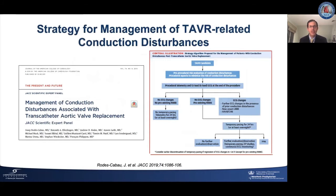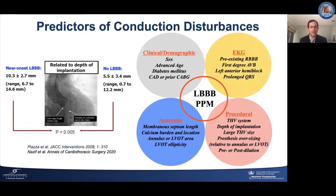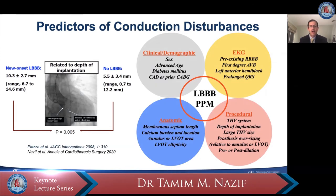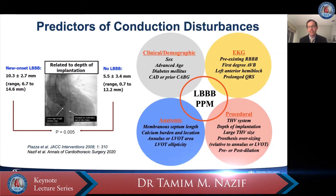There have been important recent advances in the management of TAVR-related conduction disturbances. I would point clinicians interested in this topic to a recent JACC Scientific Expert Panel, which publishes an algorithm for the management of these patients, beginning with pre-procedural risk evaluation for conduction disturbances. Early on in TAVR, prediction of conduction disturbance was relatively limited, including simply things like the type of transcatheter heart valve, depth of implantation, and perhaps right bundle branch block for pacemaker. Over time, multiple investigations have revealed additional risk factors.